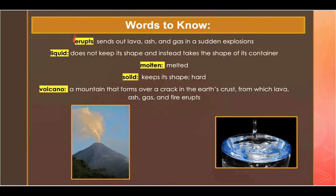The first word we're going to listen for is erupts. That means sends out lava, ash, and gas in a sudden explosion. An example of this is when a volcano erupts, it is a sudden explosion that sends out lava, ash, and gas.